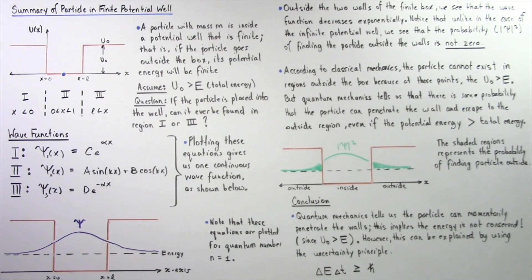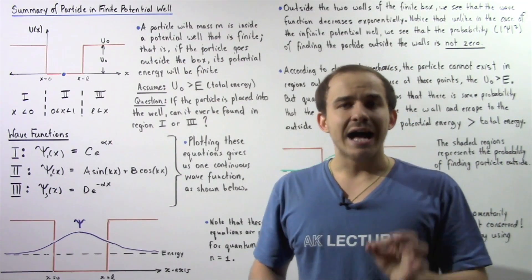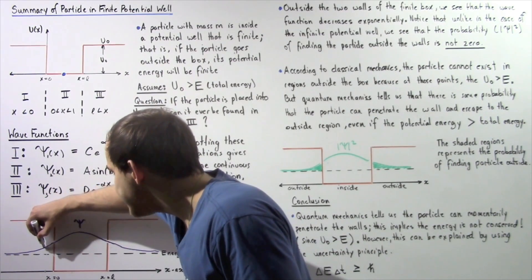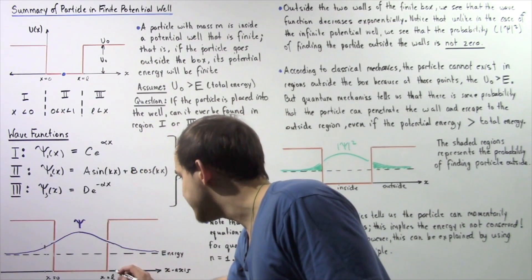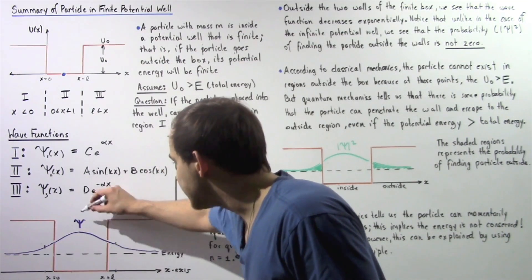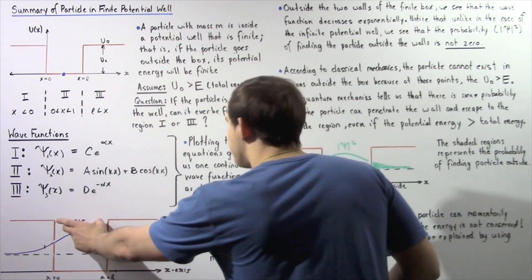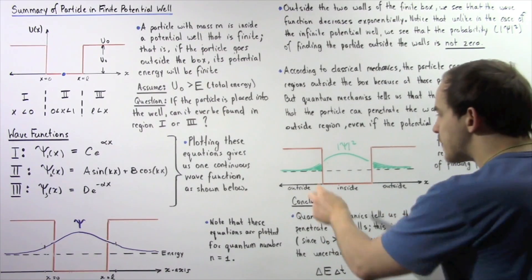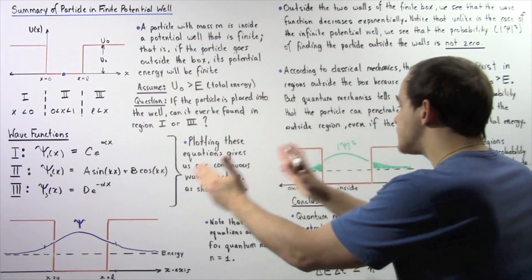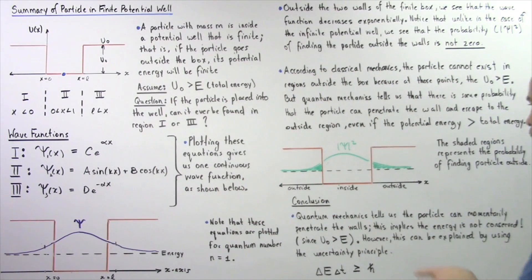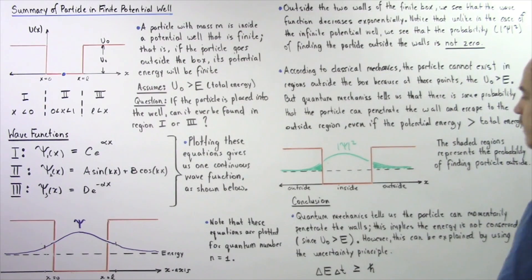Unlike in the case of the infinite potential well, the probability of finding our particle outside the walls is not equal to zero. If we go slightly outside the wall, the probability is not exactly zero — likewise on the other side, the wave function does not go to zero. If we plot the square of the absolute value of the wave function, the area underneath the curve from some initial to some final position gives us the probability of finding our particle in that region. The two shaded regions represent the probability of finding the particle outside our box.